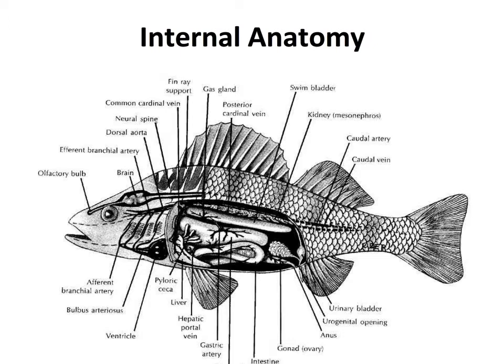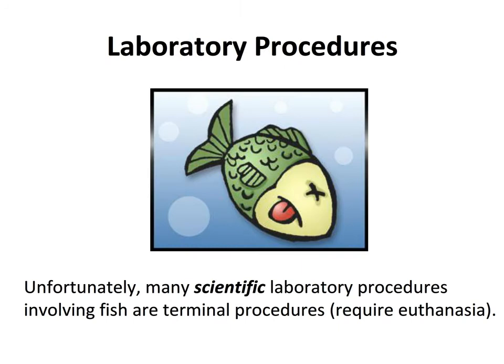The brain is located dorsally, and adjacent to the brain is an area where the otoliths are located. We're going to talk about otoliths later on in the lecture because they are used for aging.